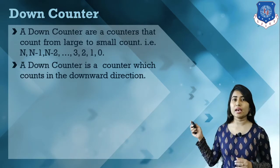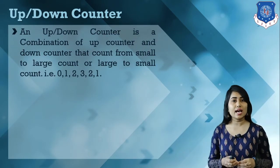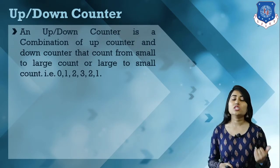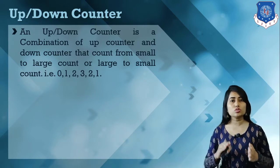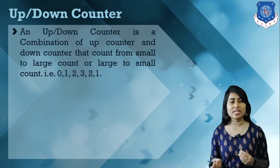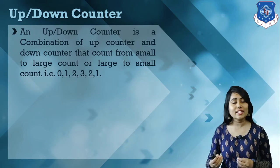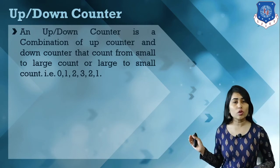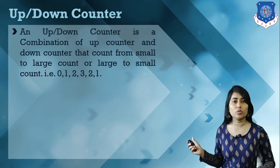The up-and-down counter is a counter which can count either from small to large or from large to small, depending on our requirement. It can count either in an upward direction or a downward direction, which is why it's known as an up-and-down counter.